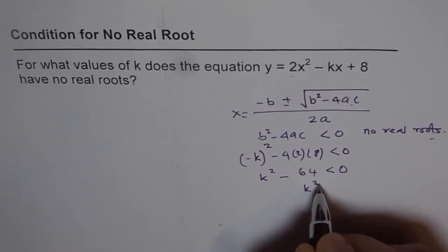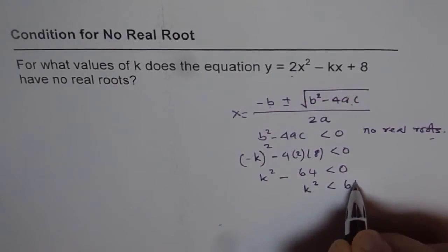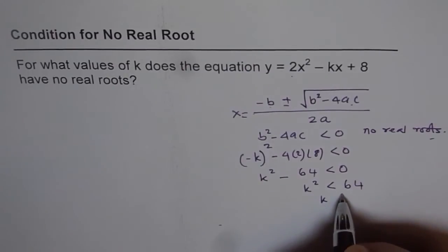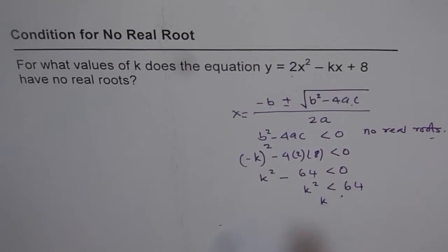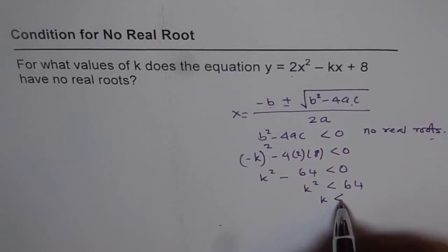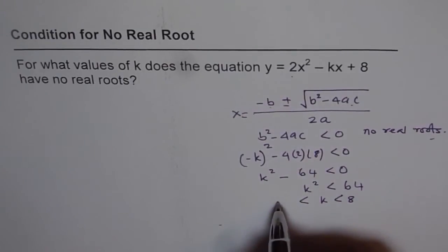So that means k² is less than 64. If k² is less than 64 to make it negative, then k should be less than 8 and greater than -8.